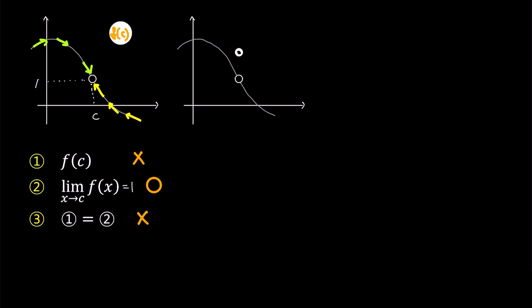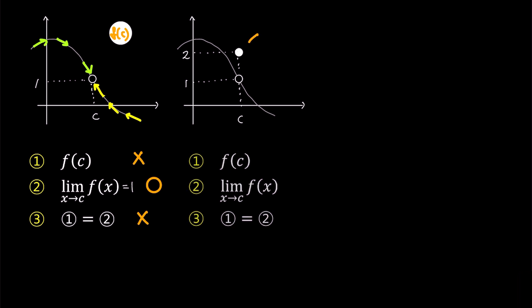In this graph, at x equals c, we observe a solid circle indicating f(c) exists and equals 2. Moreover, the left-hand limit and the right-hand limit both converge to 1, establishing the limit value as 1. However, due to the final condition where f(c) and the limit value differ from each other, this function cannot be continuous at c.